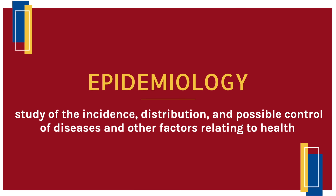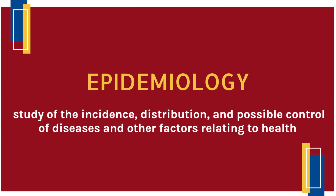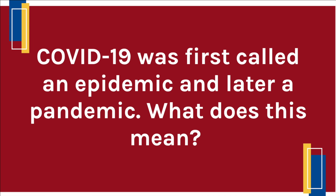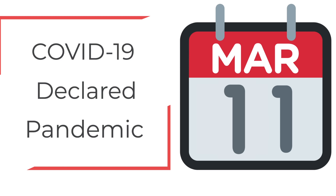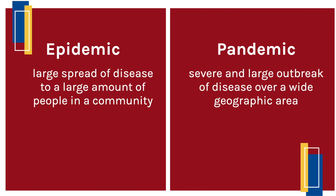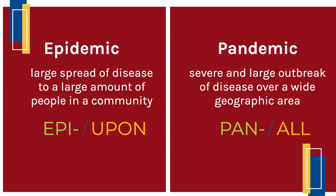Now let's talk more about the spread of the virus. Epidemiology is a study of the incidence, distribution and possible control of diseases and other factors relating to health. You might have heard that COVID was first called an epidemic and then it was declared a global pandemic on March 11th. An epidemic is a large spread of disease to a large amount of people in a community. A pandemic is a severe and large outbreak of a disease over a wide geographical area. You can remember how to differentiate these terms by their roots — epi means upon while pan means all.